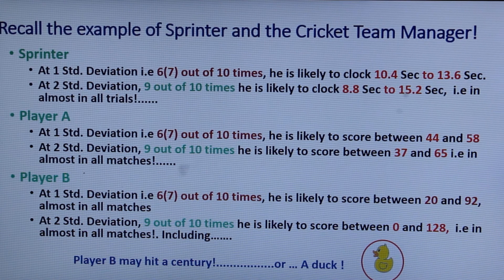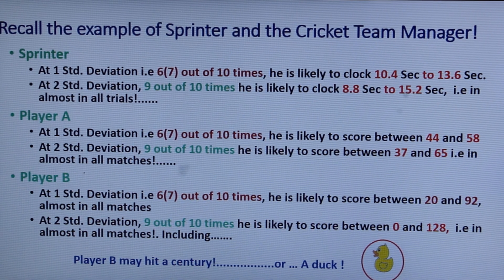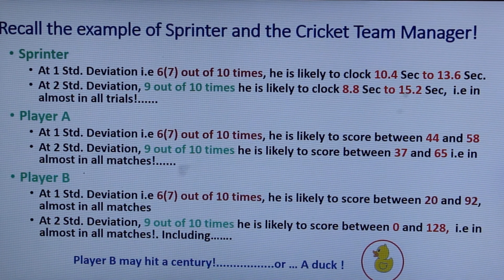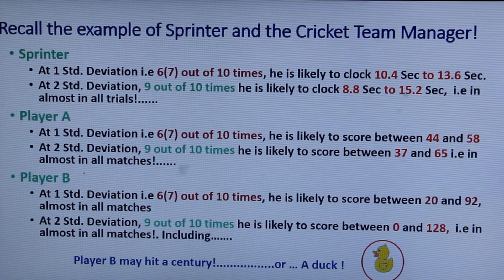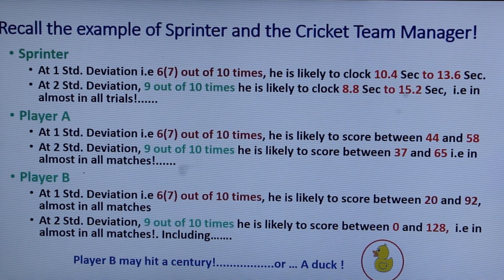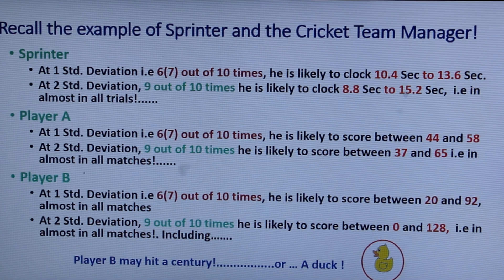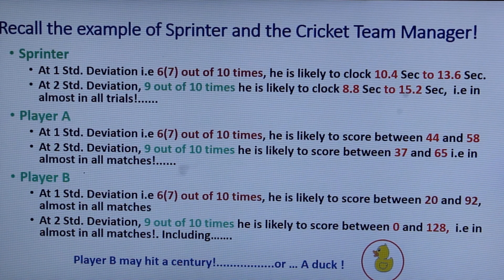That is the most important thing we have to understand. So obviously player A is much more consistent than player B because player B runs the risk of scoring a century at the same time he is also likely to score a duck. So that completes the understanding about frequency distribution and more importantly the bell curve that's the evaluate of the frequency distribution.